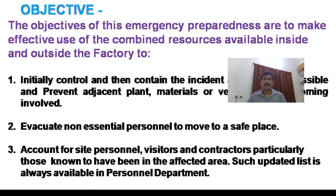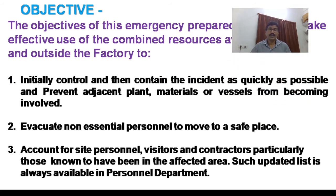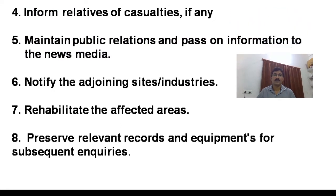Objectives. The objectives of emergency preparedness or planning are: 1. To make effective use of the combined resources available inside and outside the factory. 2. To initially control and then contain the incident as quickly as possible and prevent adjacent plant, materials or vessels from becoming involved. 3. Evacuate non-essential personnel to a safe place. 4. Account for site personnel, visitors and contractors, particularly those known to have been in the affected area — such updated lists are always available in the personnel department. 5. Inform relatives of casualties if any. 6. Maintain public relations and pass on information to the news media.